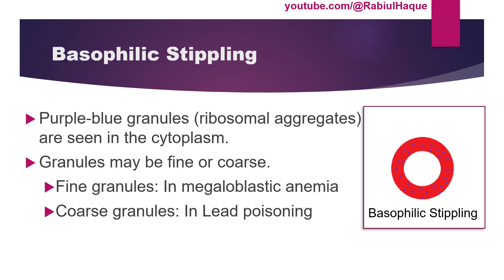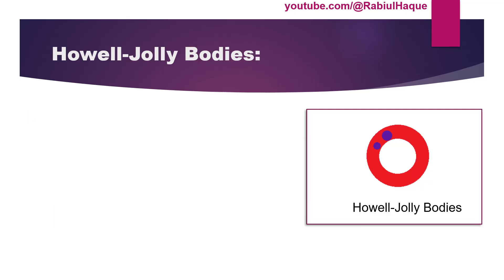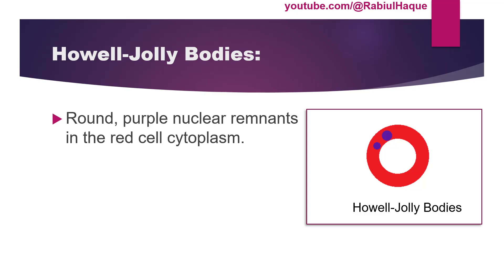Another term is Howell-Jolly bodies, where the red blood cells will contain round purple nuclear remnants in their cytoplasm.